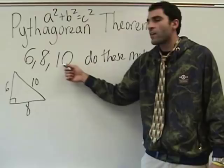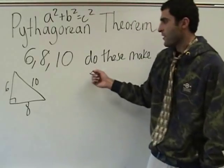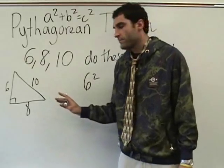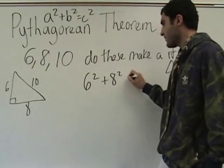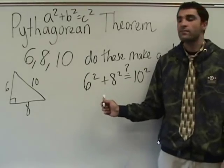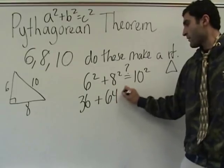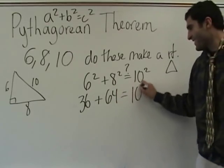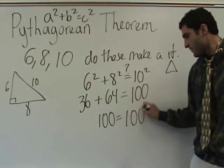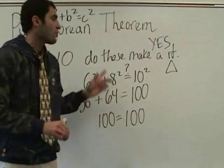So let's plug in. Which one will be our hypotenuse? 10. The hypotenuse is always the biggest side. It's the side opposite the right angle. So let's see if this works: 6 squared plus 8 squared equals 10 squared. I put a little question mark here. If this is true, then it's a right triangle. 6 squared is 36. 8 squared is 64. 10 squared is 100. So it is a right triangle. If this equation did not work — if we got like 90 equals 100 — then our answer would be no, it's not a right triangle.